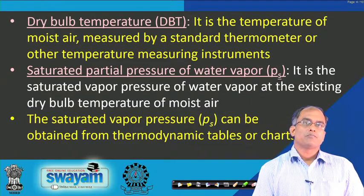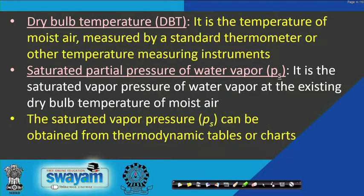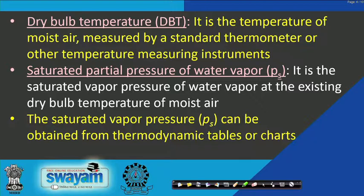Dry bulb temperature is the temperature of moist air measured by a standard or ordinary thermometer or any other temperature measuring instrument. The saturated partial pressure of water vapour, denoted P_s, is the saturated vapour pressure of water vapour at the existing dry bulb temperature of the moist air.